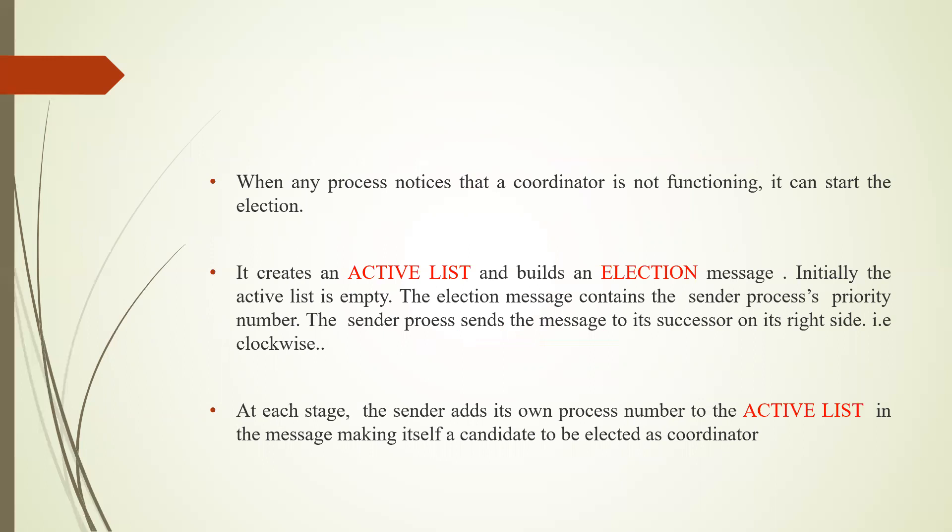When any process notices that the coordinator is not functioning, it can start the election. It creates an active list — initially empty — and builds an election message. The election message contains the sender's process priority number, which is a unique process number. The sender then sends the message to its successor on its right side, in the clockwise direction.